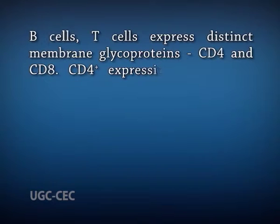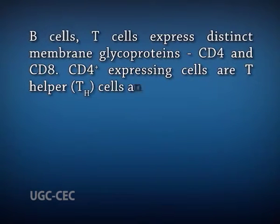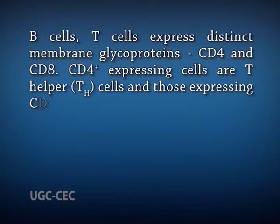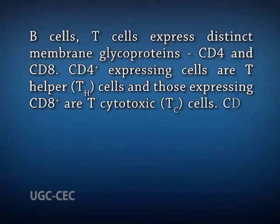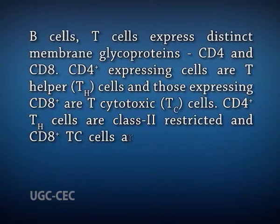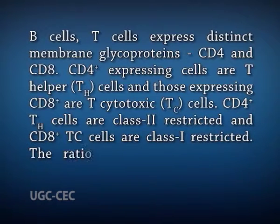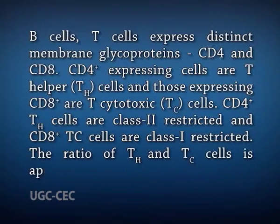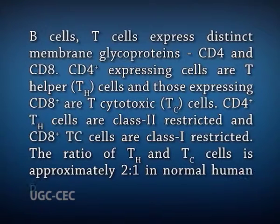Like B cells, T cells express distinct membrane glycoproteins CD4 and CD8. CD4-expressing cells are T helper cells and those expressing CD8 are T cytotoxic cells. CD4 T helper cells are class II restricted and CD8 T cells are class I restricted. The ratio of T helper to cytotoxic T cells is approximately 2:1 in normal human peripheral blood.